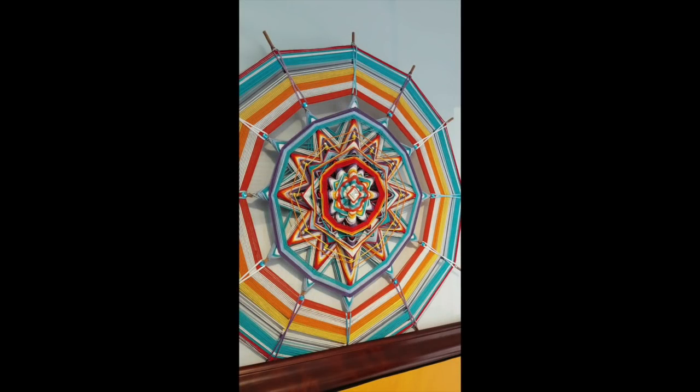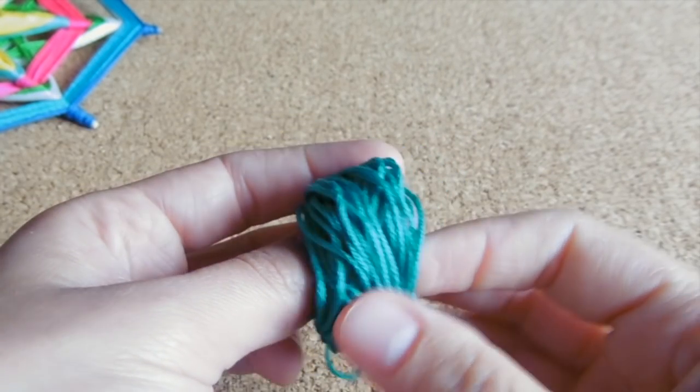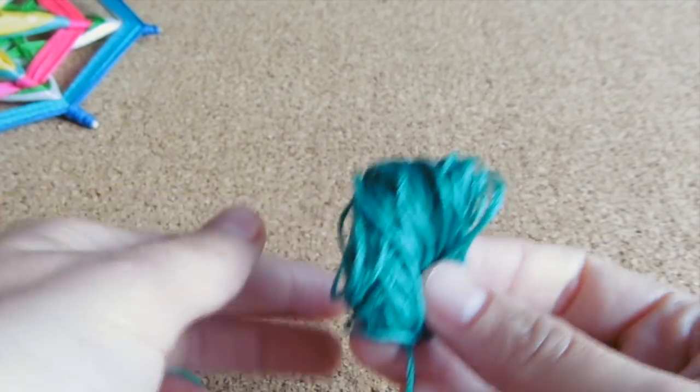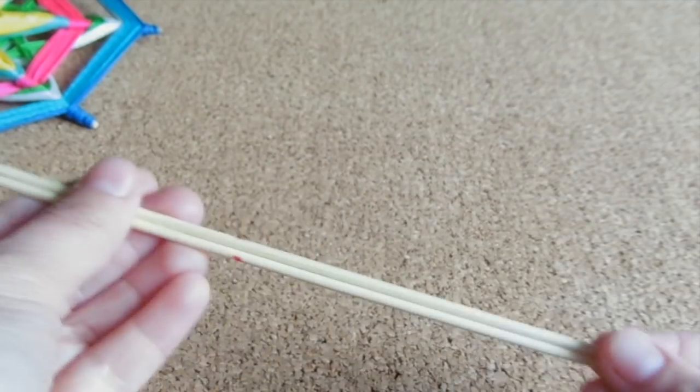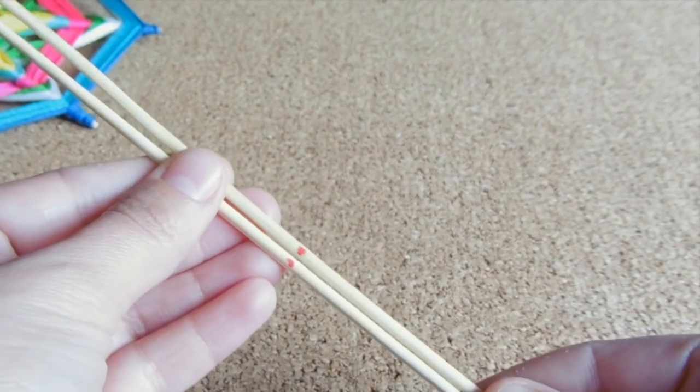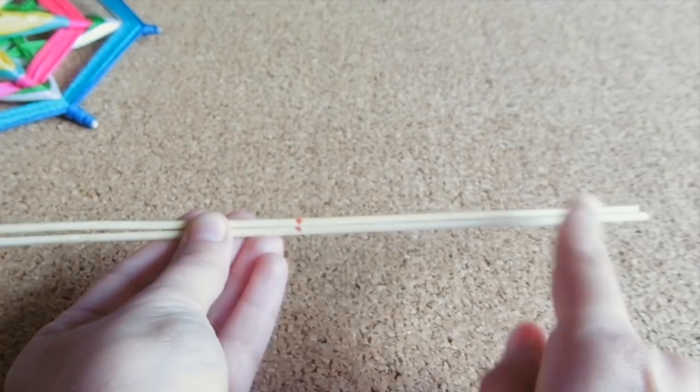These mandalas or God's eyes can be made in all sizes. We'll make small balls with the thread and put them aside on the table to take the colors as the inspiration hits us. Before we begin, we'll have to cut the tip of the sticks if they have any and we'll mark the center with a ruler.